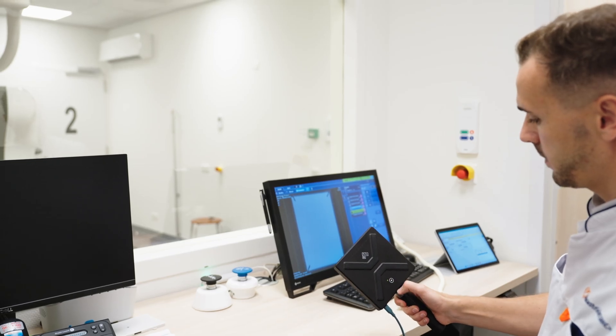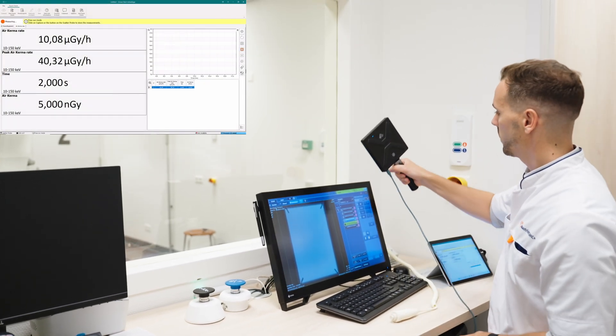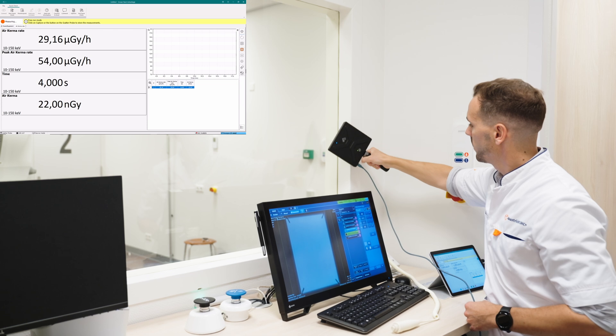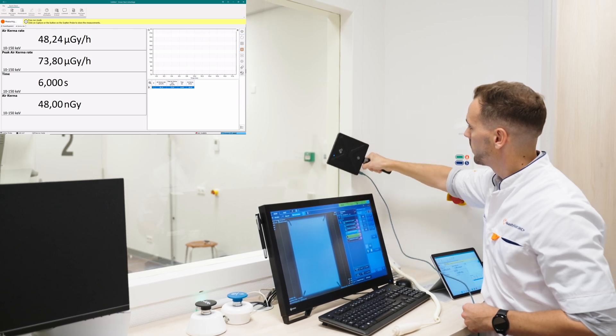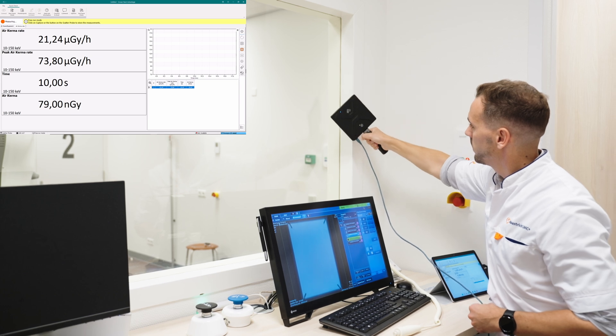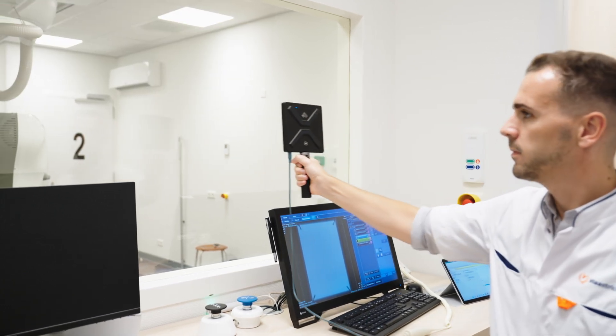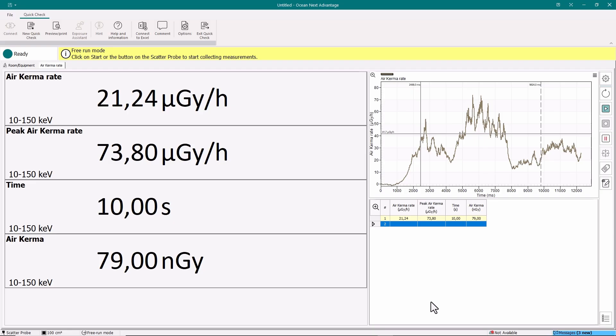If an area of interest needs to be further investigated the scatter probe can be used in free run mode and held using the handle provided. Move the scatter probe slowly around the area of interest during x-ray exposure. The clicking noise and LED lights on the scatter probe will indicate measurement intensity and values will update automatically on the display.